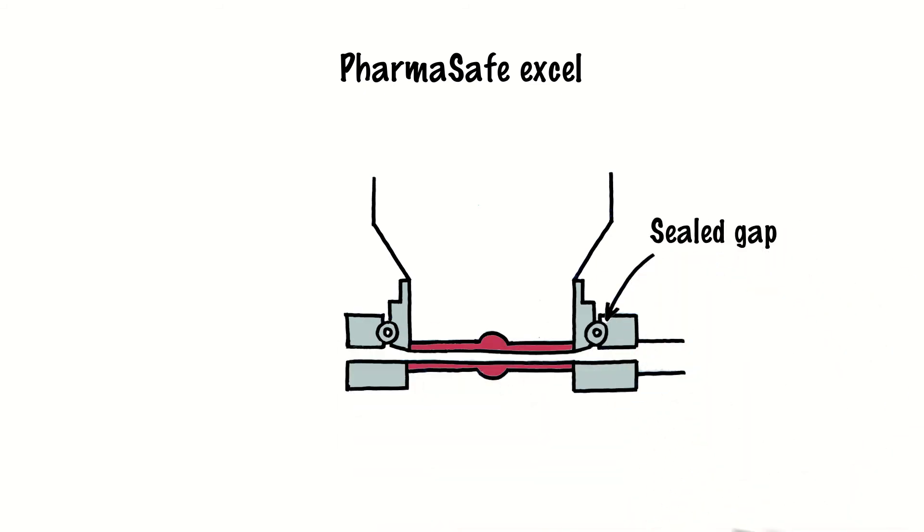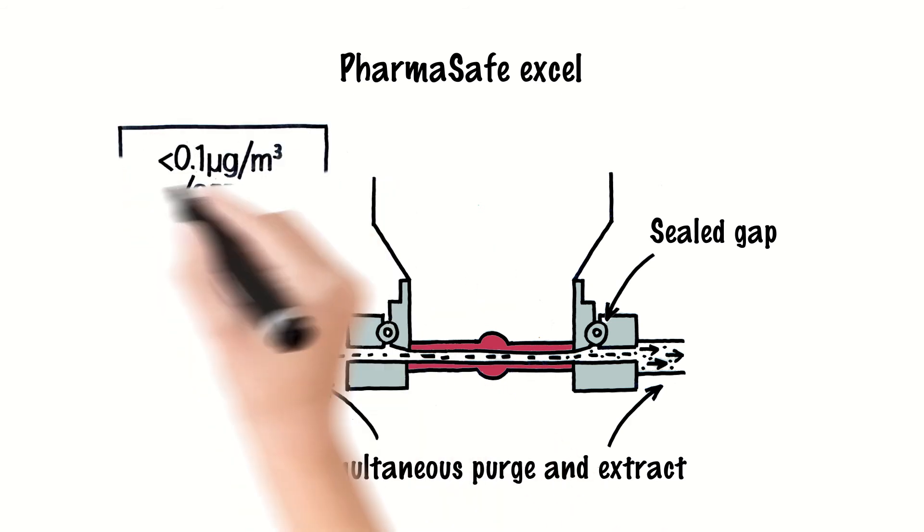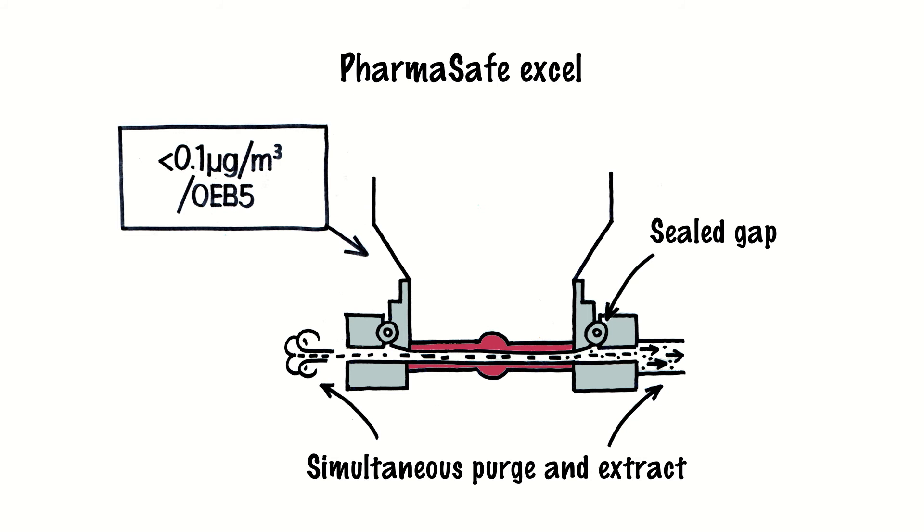A high-velocity purge and extraction sequence is run to remove traces of dust particulate that could become airborne once the valve is undocked. This performs to nanogram levels below 0.1 microgram per meter cubed.